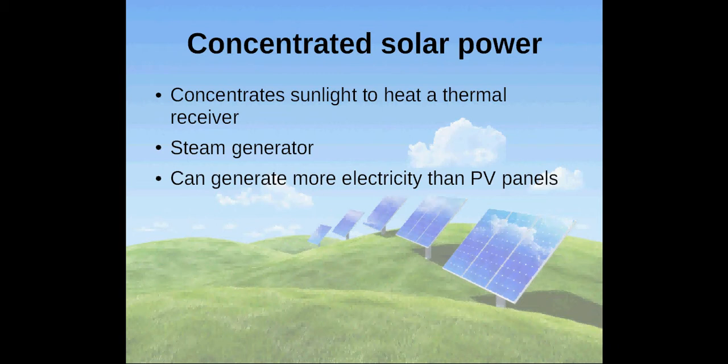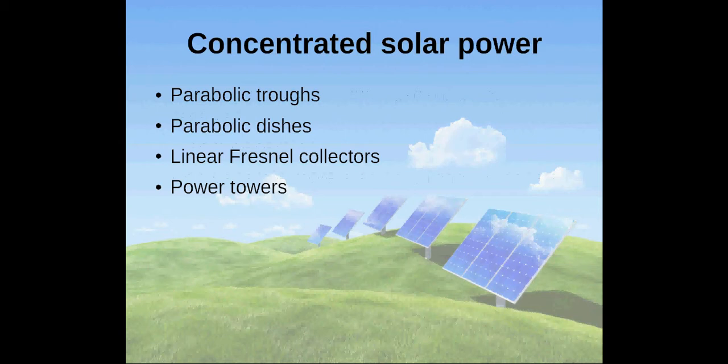There are four current CSP technologies, categorized in their ability to focus the sun's rays and receive the sun's energy: parabolic troughs, parabolic dishes, linear Fresnel collectors, and towers or CRS.